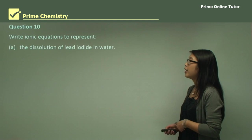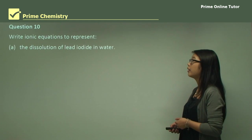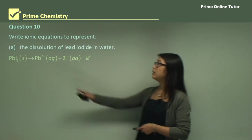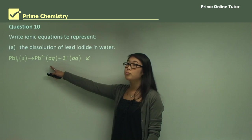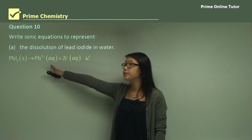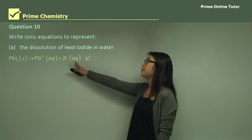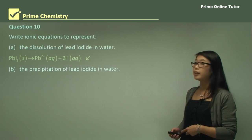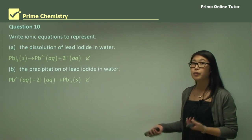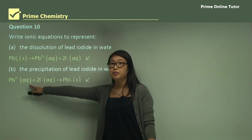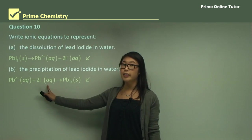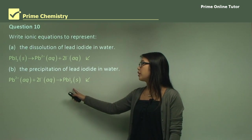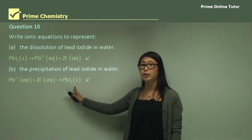Question ten: write ionic equations to represent the dissolution of lead iodide in water. Lead iodide as a solid dissociates in water to form two sets of ions: lead (aq) and two iodide ions (aq). For the precipitation of lead iodide — the reverse — we start with the lead ion and iodide ion in solution, and combining them forms a solid precipitate, so we write the full molecular formula with S to show it's a solid.